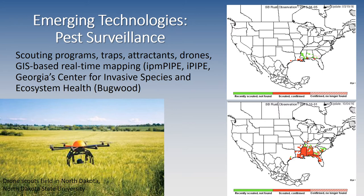On the right, we have two images from the IPM Pipe. The upper image is from April 5th, 2016, and it shows areas that have been scouted for soybean rust and where it's been confirmed or not found. The lower image is for soybean rust as well, but from October 1st, 2016, and you can see that the presence of soybean rust has been confirmed in a much larger geographical area. This type of information is delivered in real time to growers who can sign up for alerts — a very important system for growers at risk of this pathogen moving into their fields.